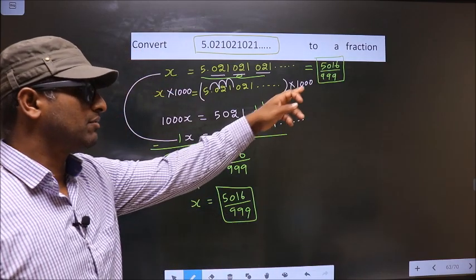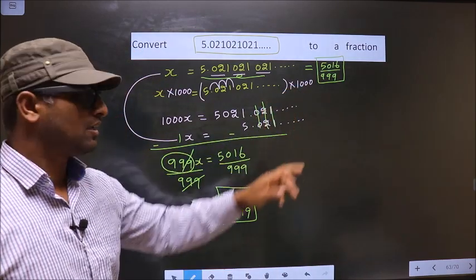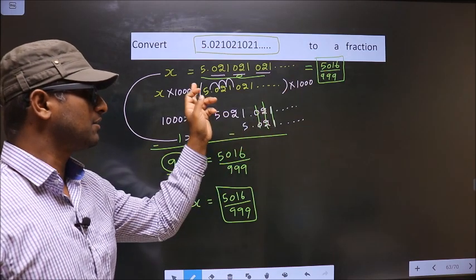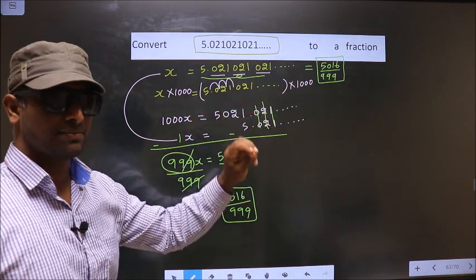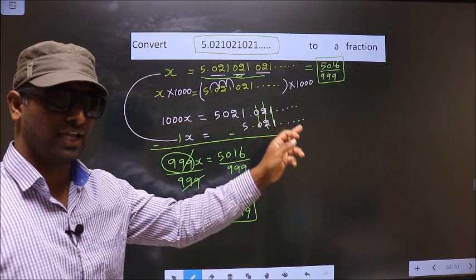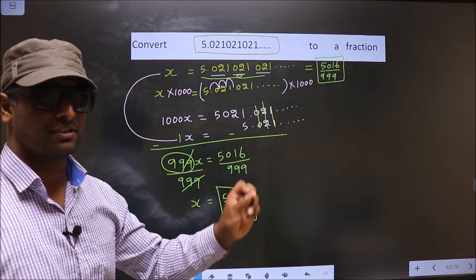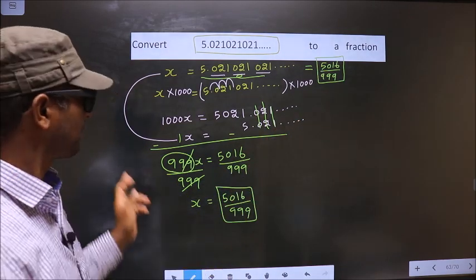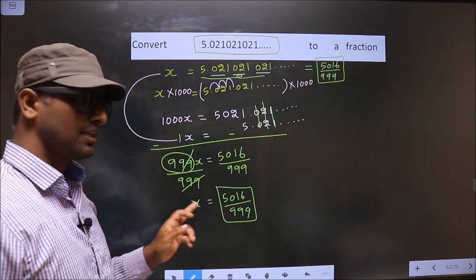Now, to confirm the answer, you put this fraction in the calculator and you should get this recurring decimal. If you get it, your fraction is correct. Otherwise, not. Am I clear?